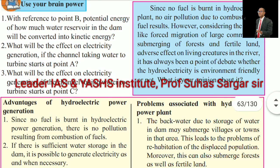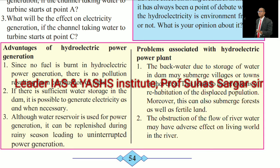Advantages of hydroelectric power generation: Since no fuel is burned, there is no pollution from combustion of fuels. If there is sufficient water storage in the dam, it is possible to generate electricity as and when necessary. The water reservoir can be replenished during the rainy season, leading to uninterrupted power generation. Problems associated with hydroelectric power plants: The backwater due to storage of water in a dam may submerge villages or towns, leading to problems of rehabilitation of the displaced population. This can also submerge forests and fertile land. The obstruction of the flow of river water may have adverse effects on living creatures in the river.